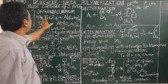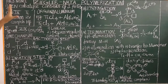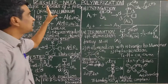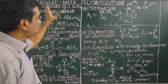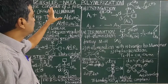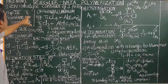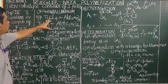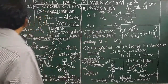This is an example of a heterogeneous catalyst. You know heterogeneous catalysis — the catalyst is a solid. Titanium tetrachloride is in a solid state.